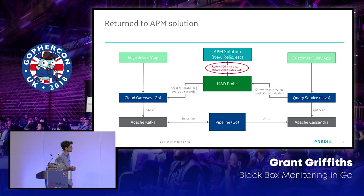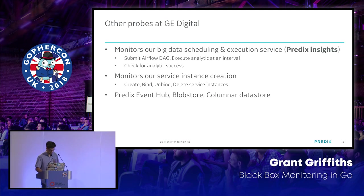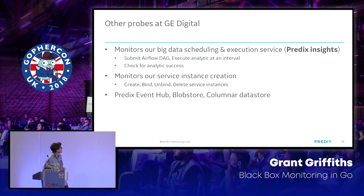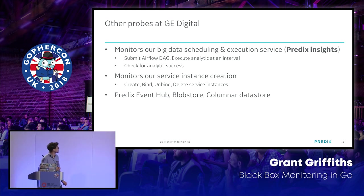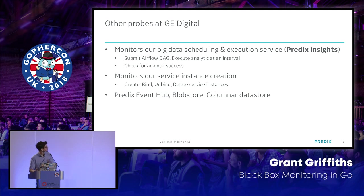This is an example of a time series service at GE Digital and how we monitor it from a black box perspective. We usually have one probe per service. We also have a big data scheduling and execution service called Predix Insights, where the probe schedules analytics to run every five seconds and verifies that those analytics run correctly with good output. If that all works, we know the service must be up.